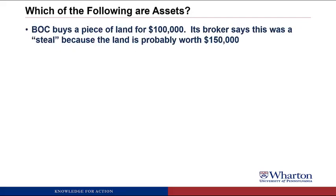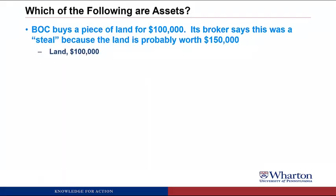BOC buys a piece of land for $100,000. Its broker said this was a steal because the land is probably worth $150,000. This is an asset called land. It meets the first criteria because there was a market transaction where we acquired ownership. The value of the benefits is assumed to be what we paid — $100,000. We ignore what the broker thinks the land is worth because that's not objective. We use the more objective number of what we actually paid, so land is worth $100,000.